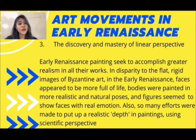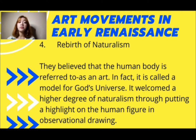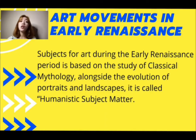So many efforts were made to put up a realistic depth in paintings using scientific processes. Math, science, and art led to the discovery of perspective in art. Since the Renaissance period became more realistic, the perspective of the human body had changed. They believed that the human body is referred to as art — in fact, it is called the model for God's universe. It welcomed a higher degree of naturalism through highlighting the human figure and observational drawing. Moreover, the period introduced more accurate spatial coordination of sculptures, buildings, and paintings through the innovation of drawing. Subjects for art during the early Renaissance were based on the study of classical mythology alongside the evolution of portraits and landscapes.